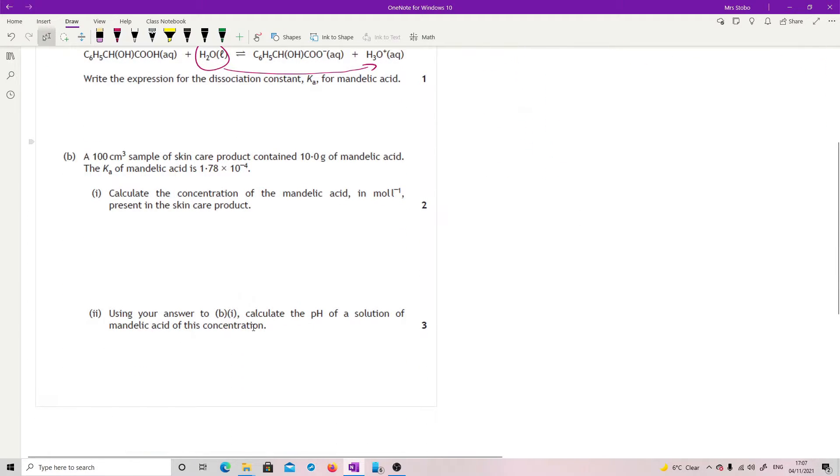A 100 centimeter cubed sample of skincare product contains 10 grams of mandelic acid. Ka of mandelic acid is 1.78 times 10 to the minus 4. Calculate the concentration in moles per liter present in skincare product. So what we have: we've got mass, we've got a volume, and I've got a Ka. What I also have, which is rather important, I have the formula. So if I've got mass, I can work out moles. Moles is mass divided by formula mass.